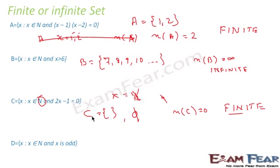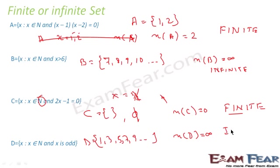Example: set D where x is a natural number and x is odd. In roster form, D = {1, 3, 5, 7, 9, ...} extending to infinity — so D is an infinite set. To summarize: set A has 2 elements → finite; set B has infinite elements → infinite; set C has 0 elements → finite; set D has infinite elements → infinite.